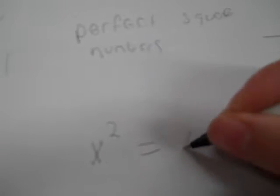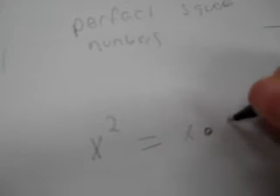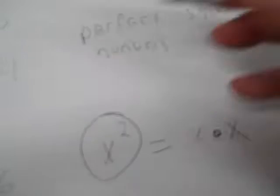Now x squared is also a perfect square because I can write that as x times x. So what I want you to look on here is identify the expressions that represent a difference of perfect squares.